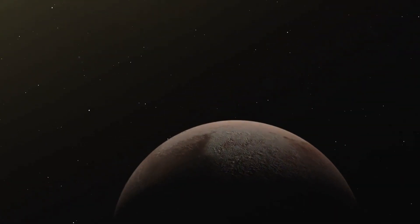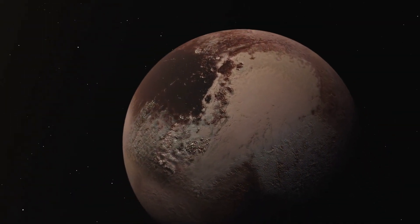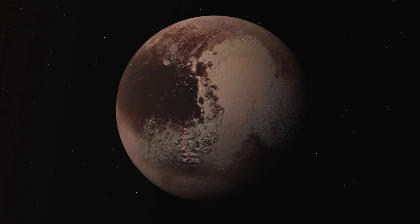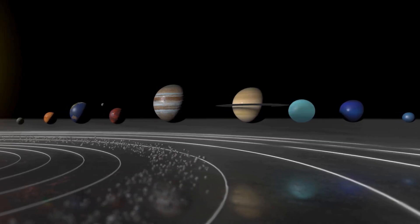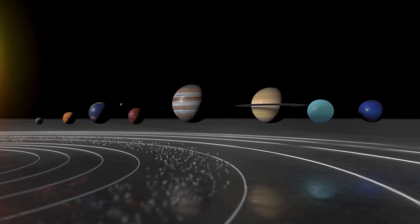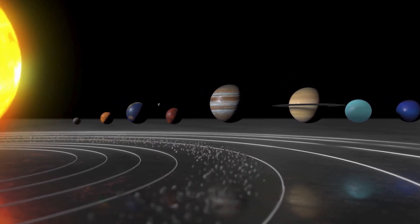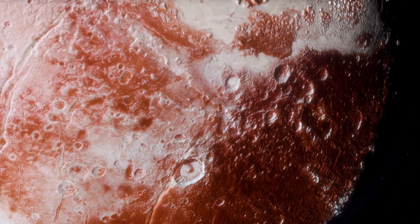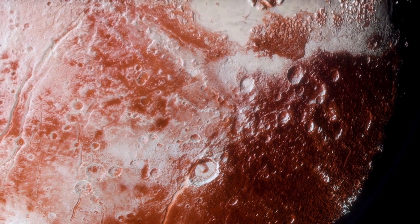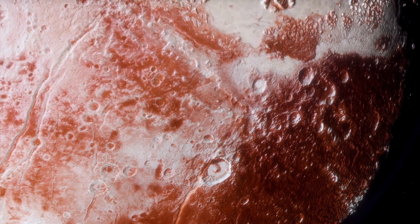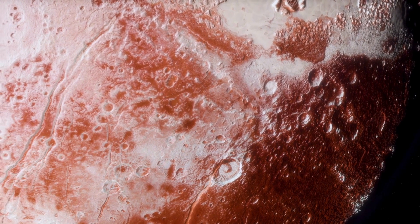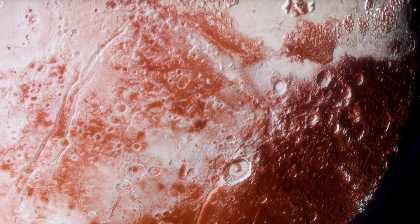Pluto's journey around the Sun is unlike any other planet in our solar system. It takes a staggering 248 years to complete a single orbit, meaning since its discovery in 1930, it hasn't even finished one full revolution. But the intrigue doesn't stop there. Pluto's path is marked by its highly elliptical shape, deviating significantly from the near-circular orbits of the major planets.